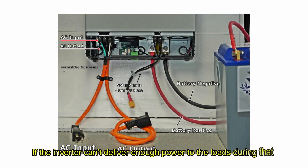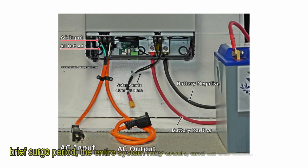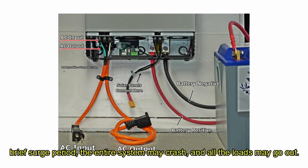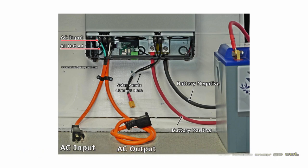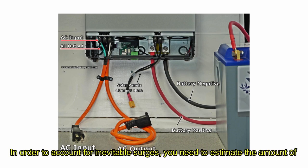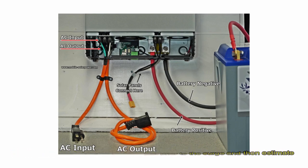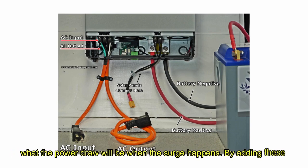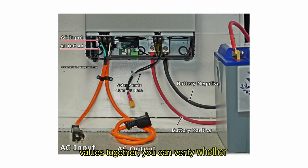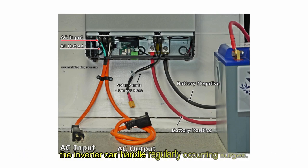If the inverter can't deliver enough power to the loads during the brief surge period, the entire system may crash and all the loads may go out. In order to account for inevitable surges, you need to estimate the amount of power the inverter will be providing just prior to the surge, and then estimate what the power draw will be when the surge happens. By adding these values together, you can verify whether the inverter can handle regular occurring surges.